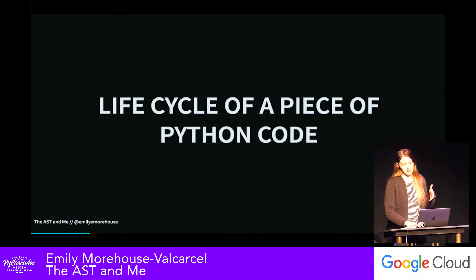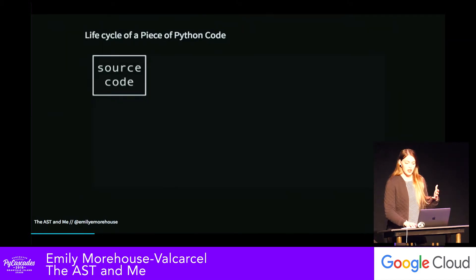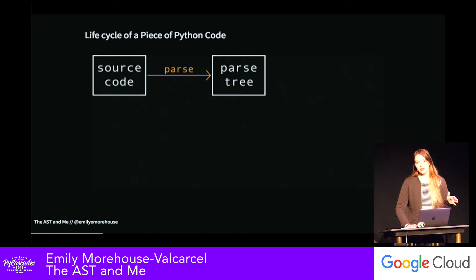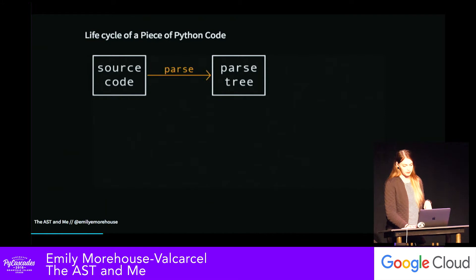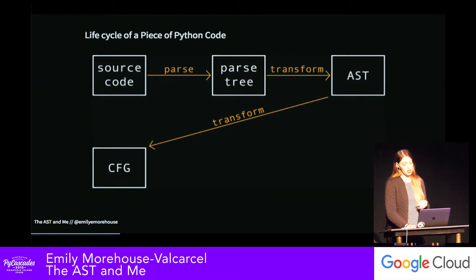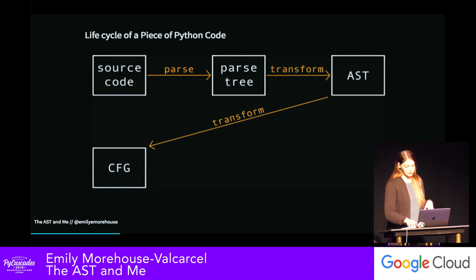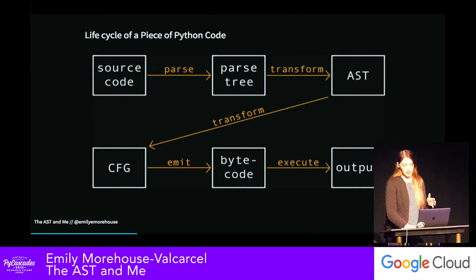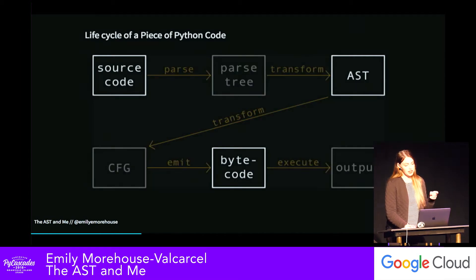Let's zoom in a little bit to see more of what this process actually looks like. We start with a piece of source code. That source code gets parsed into a parse tree. Parse trees are a little more detailed than what we actually want to work with. So we transform our parse tree into an abstract syntax tree, or AST. We then transform the AST into what's called a CFG, or control flow graph — a directed graph that models the flow of your program. From there we emit our bytecode, execute it, and get our output. We're going to focus on source code, the AST, and the bytecode generated from that AST.